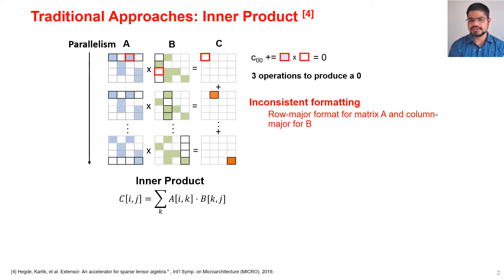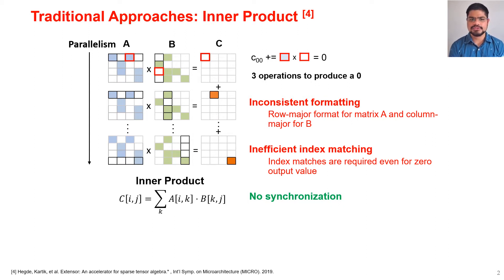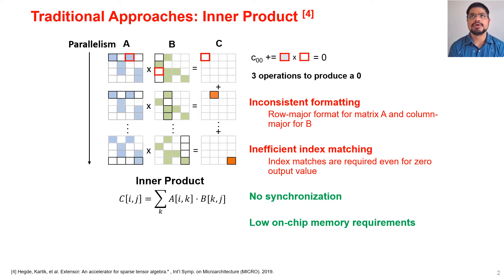The inner product approach has a few major advantages and disadvantages. First, there is inconsistent formatting because matrix A is stored in row-major order and matrix B is stored in column-major order. Then we have inefficient index matching, as we already saw. However, it does not require any synchronization because different output elements can be produced in parallel, and it has low on-chip memory requirements since it only needs to store a row of A and a column of B in on-chip memory.